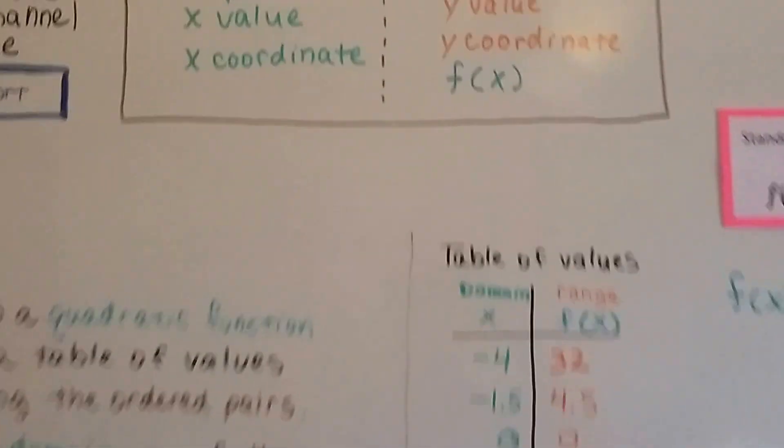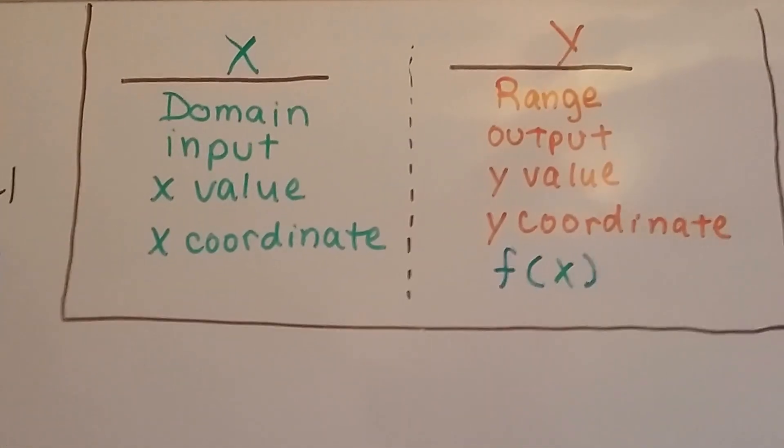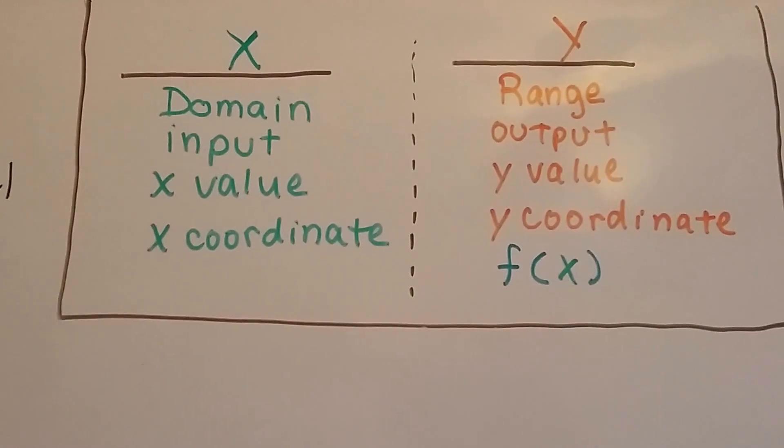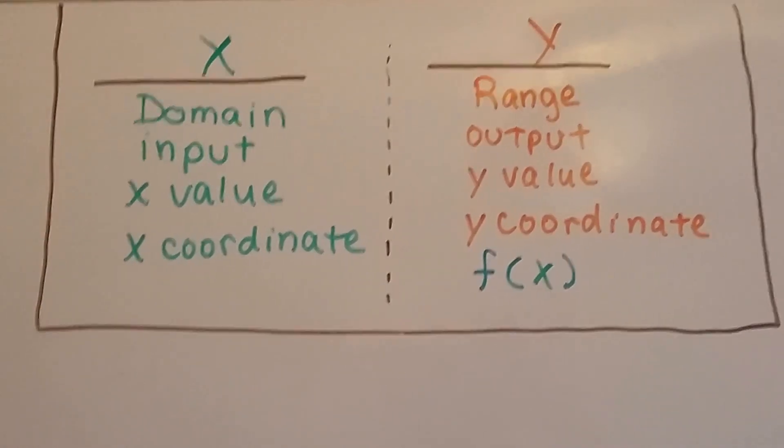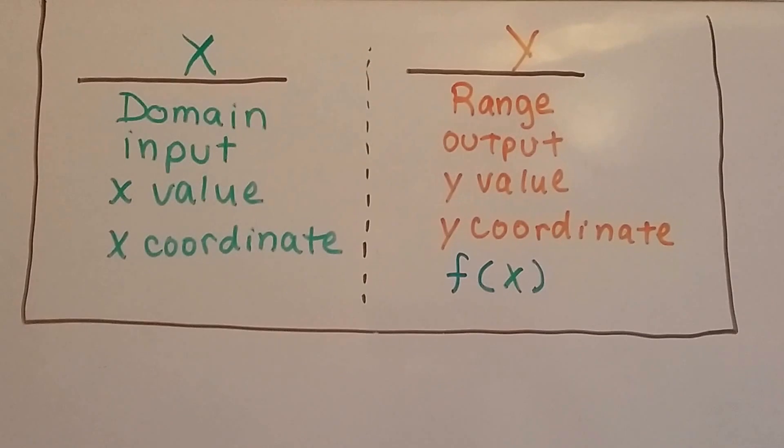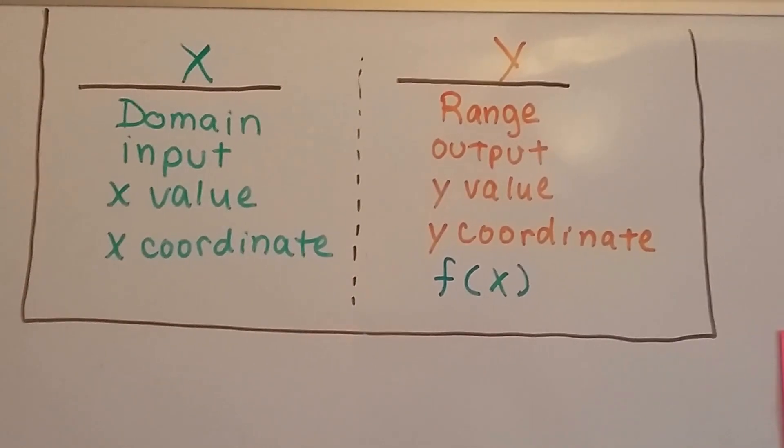So, just remember that the x is the domain, the input, the x value, the x coordinate, and the y is the range, the output, the y value, the y coordinate, the function of x. Okay?